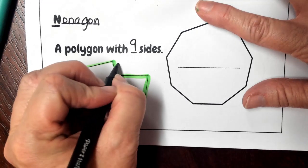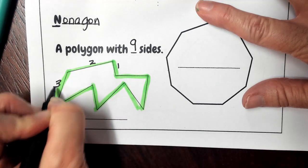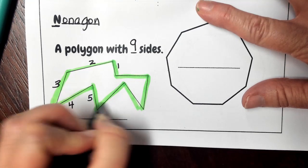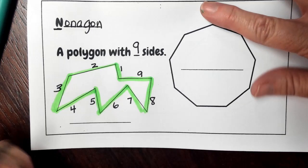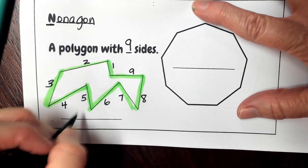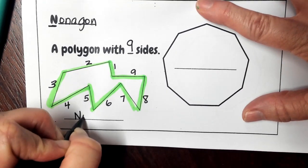So I'm just going to go back and put numbers with that, so each line segment gets its own number value. Okay, so there's my 9 sides, a nonagon.